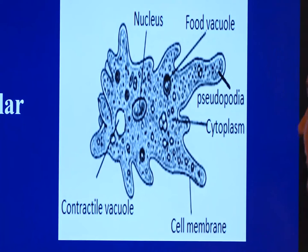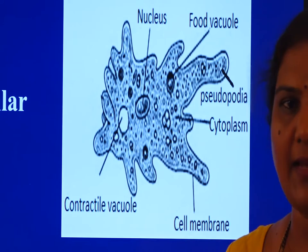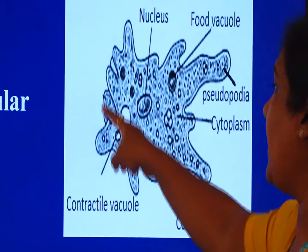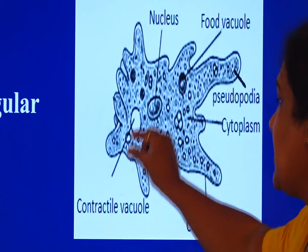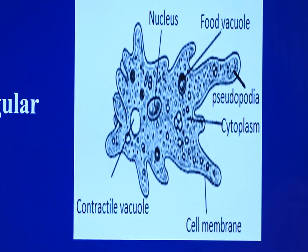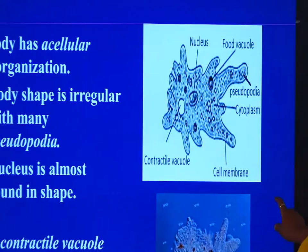There is also a contractile vacuole, which is considered the osmoregulatory apparatus. It maintains the water concentration inside the body by pinching off any extra water content, moving toward the edge of the cell membrane. These are the characteristic features you should cite when you have identified that the given slide is amoeba.